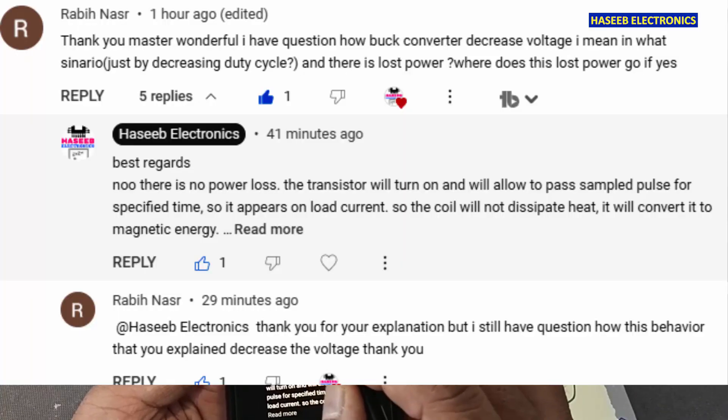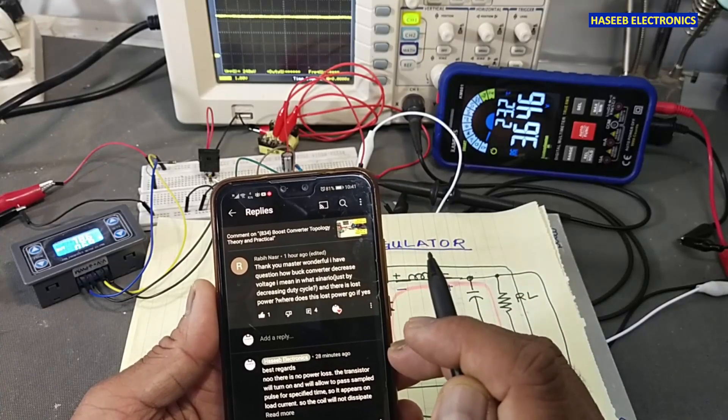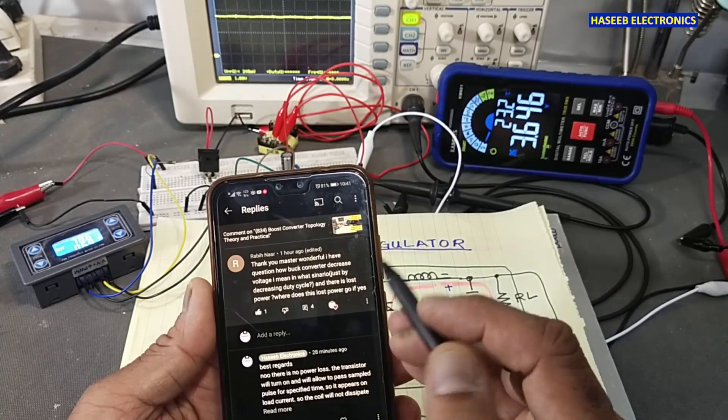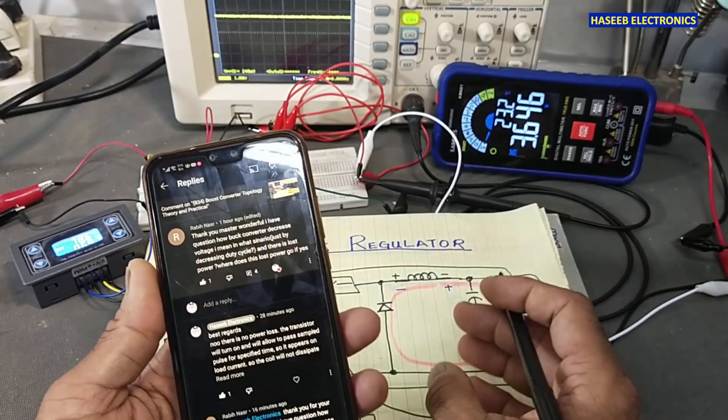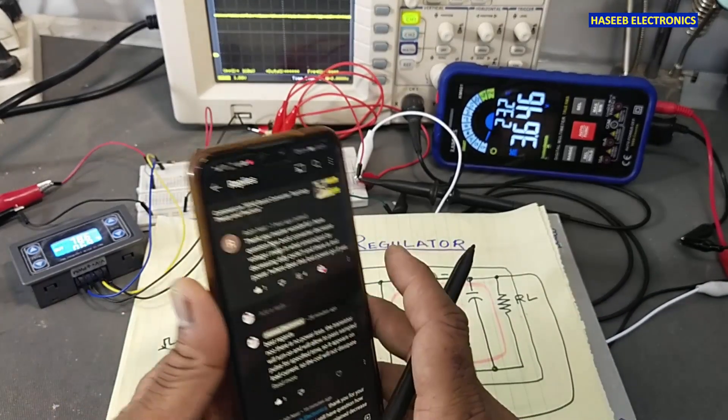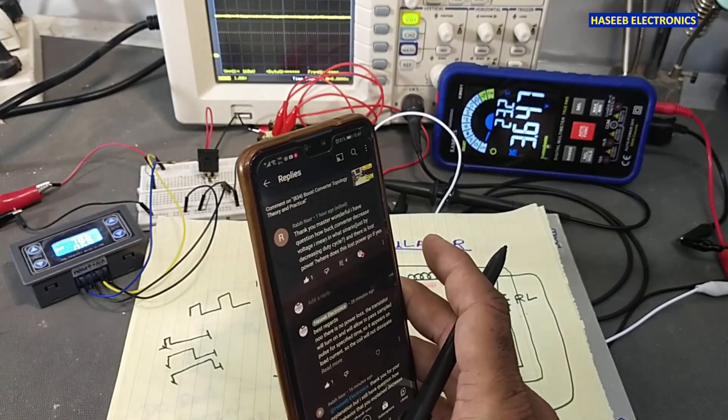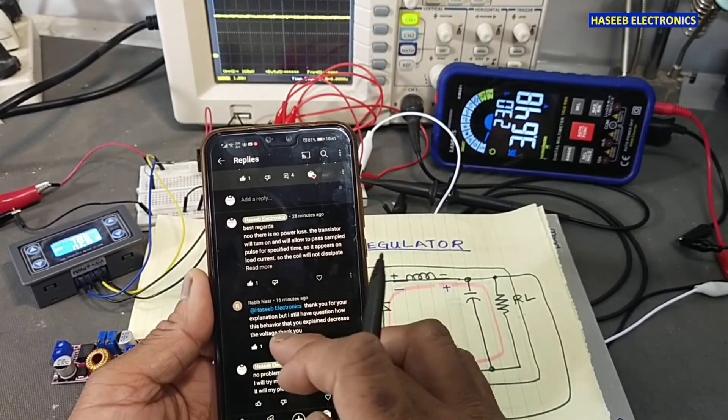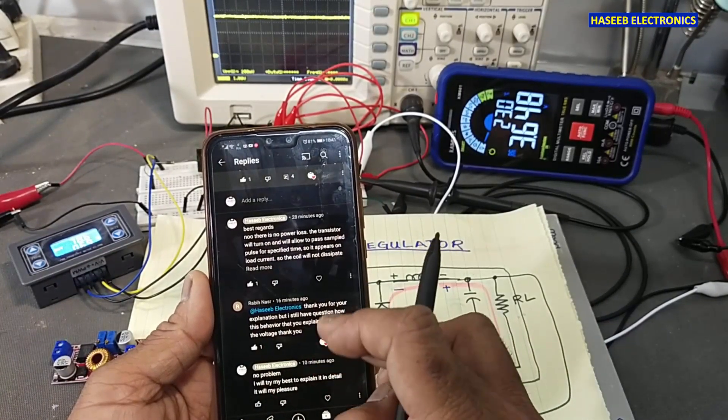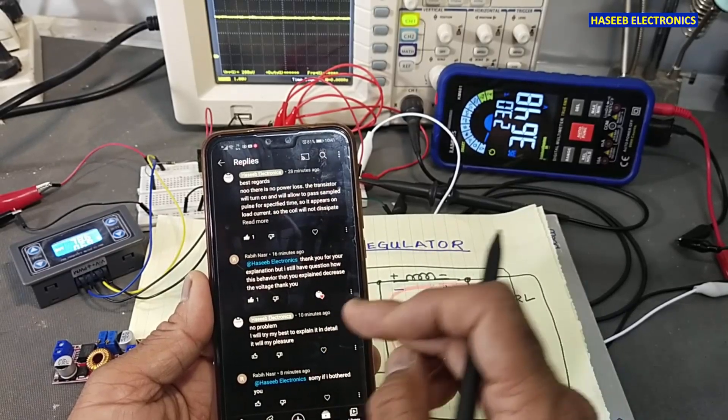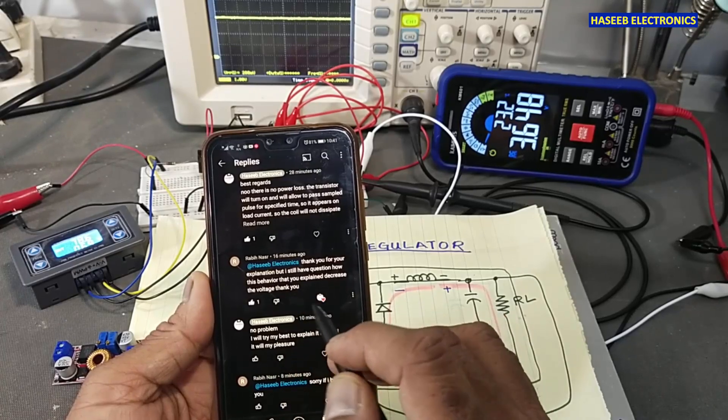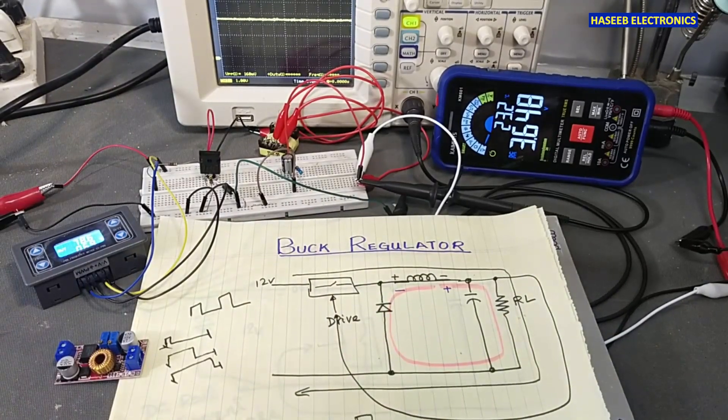This is a question from my viewer. He said wonderful video, I have a question: how does buck regulator decrease the voltage? In which scenario, where will the power loss in these regulators? There is no power loss, there are some switching losses which are negligible.